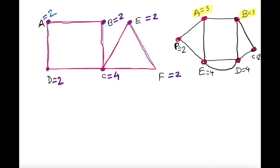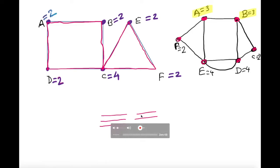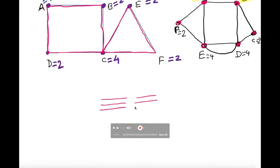We should always start tracing at an odd-degree vertex. If there are three edges at a vertex and we start at an even-degree vertex, we can't balance the entry and exit properly. So when there are exactly two odd-degree vertices, always start at one of those odd vertices — don't start at an even one.